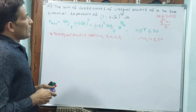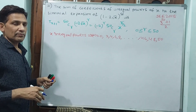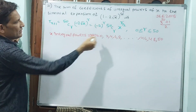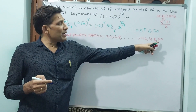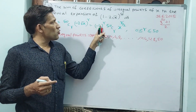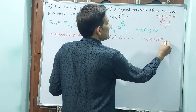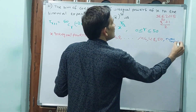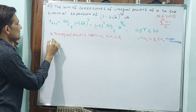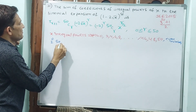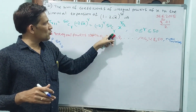Now we know the r values, but how do we find the coefficients and their sum? When r is an even number, (−2)^r = 2^r — the negative sign makes no difference because even powers are always positive. So the sum becomes: 2^0 · 50C0 + 2^2 · 50C2 + 2^4 · 50C4 + ...